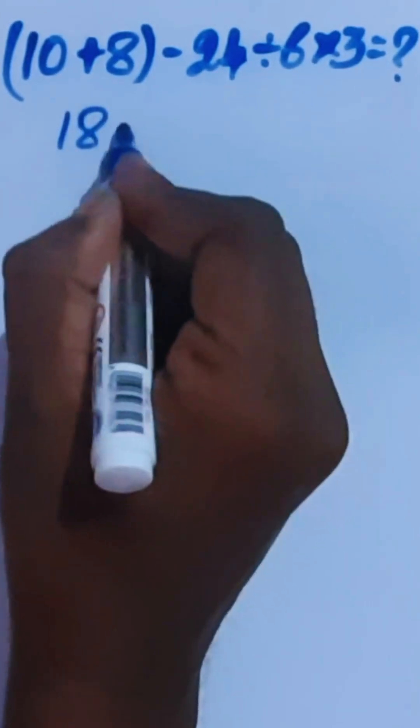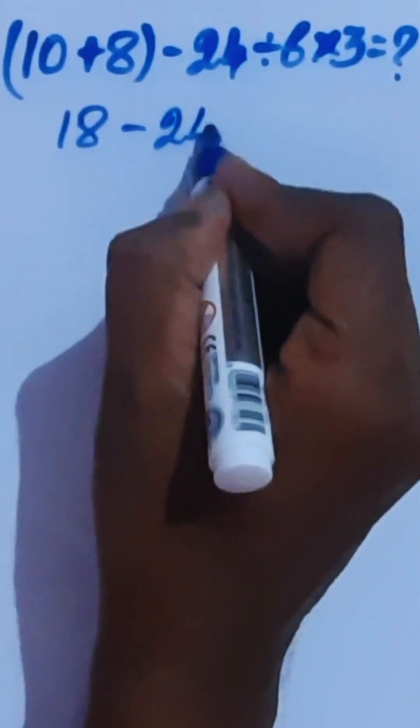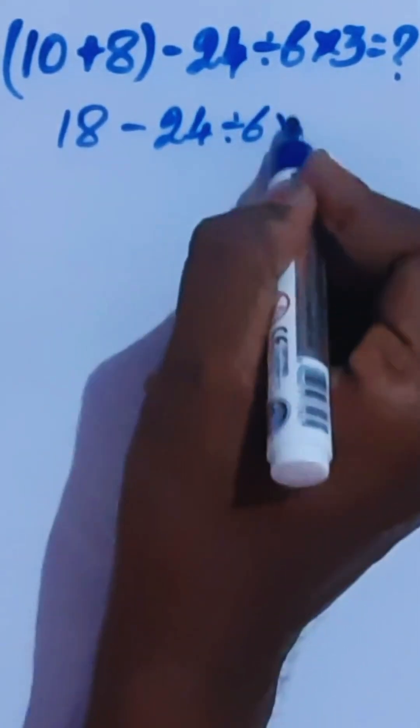Hi guys, here 10 plus 8 is 18 minus 24 divided by 6 times 3.